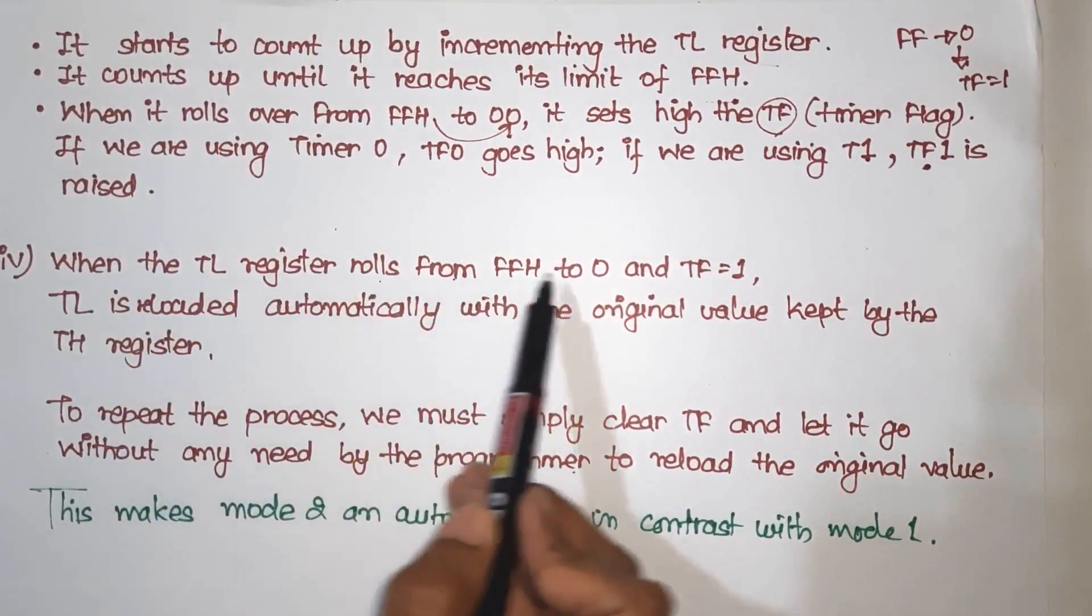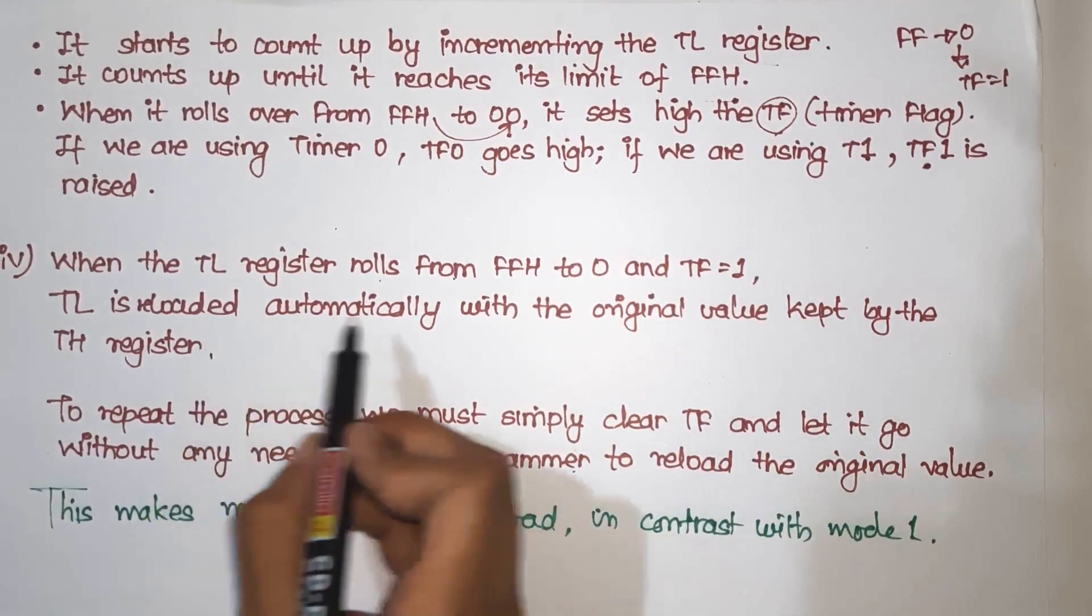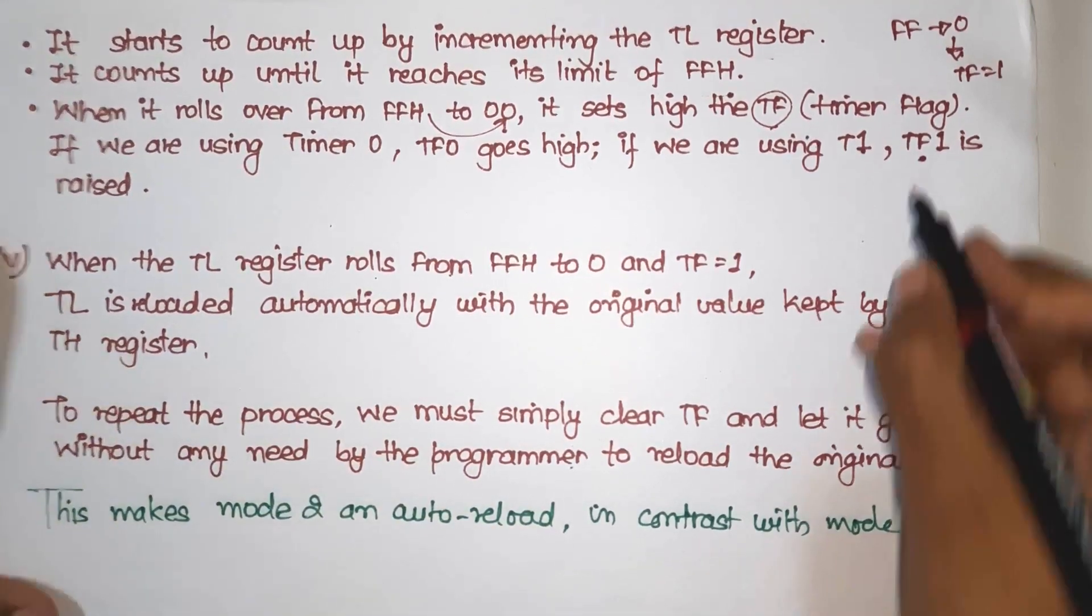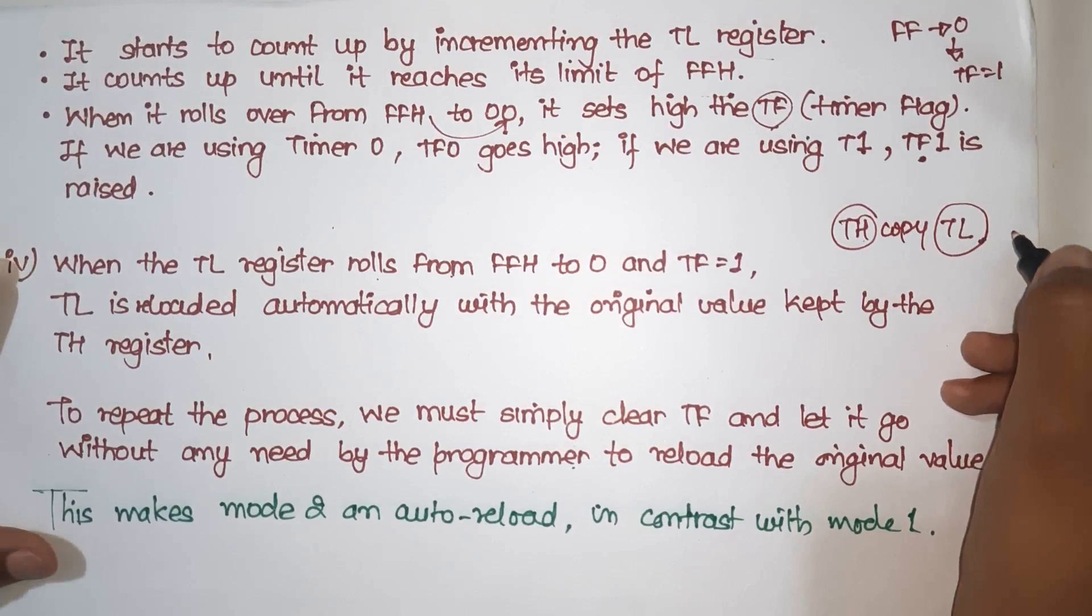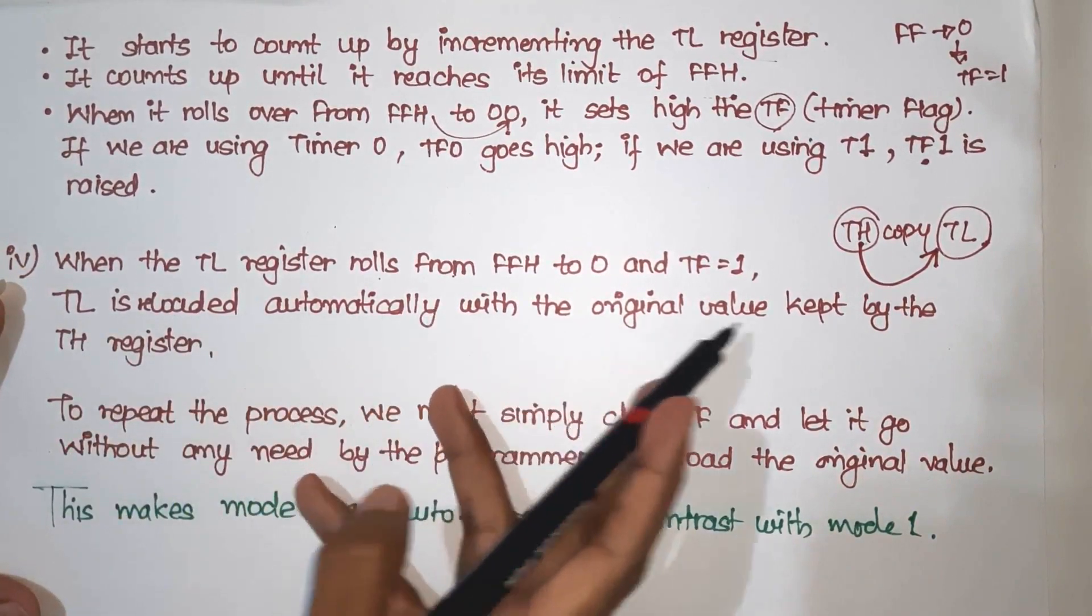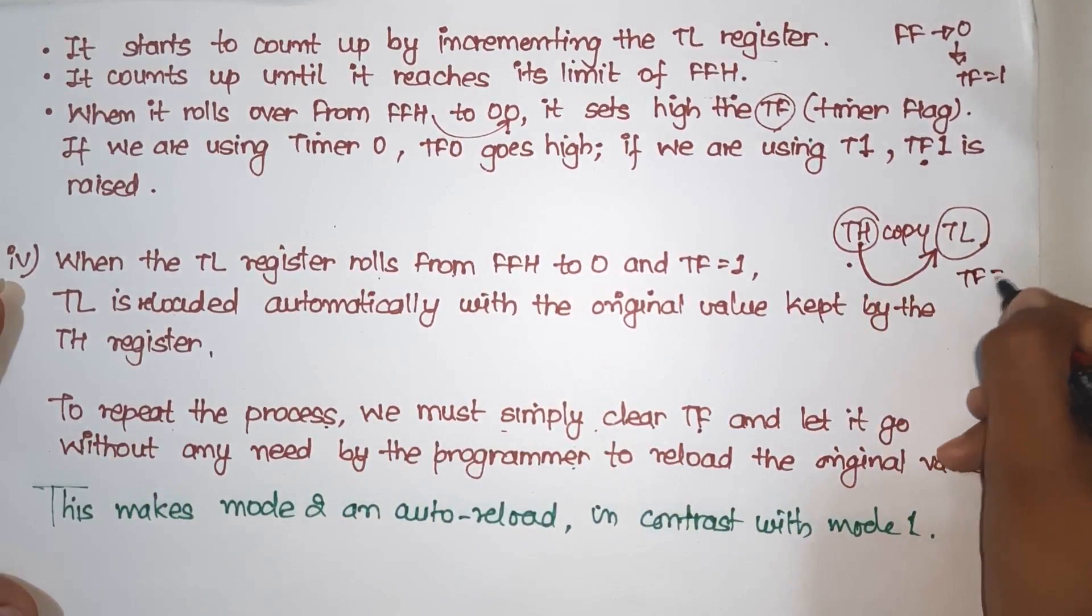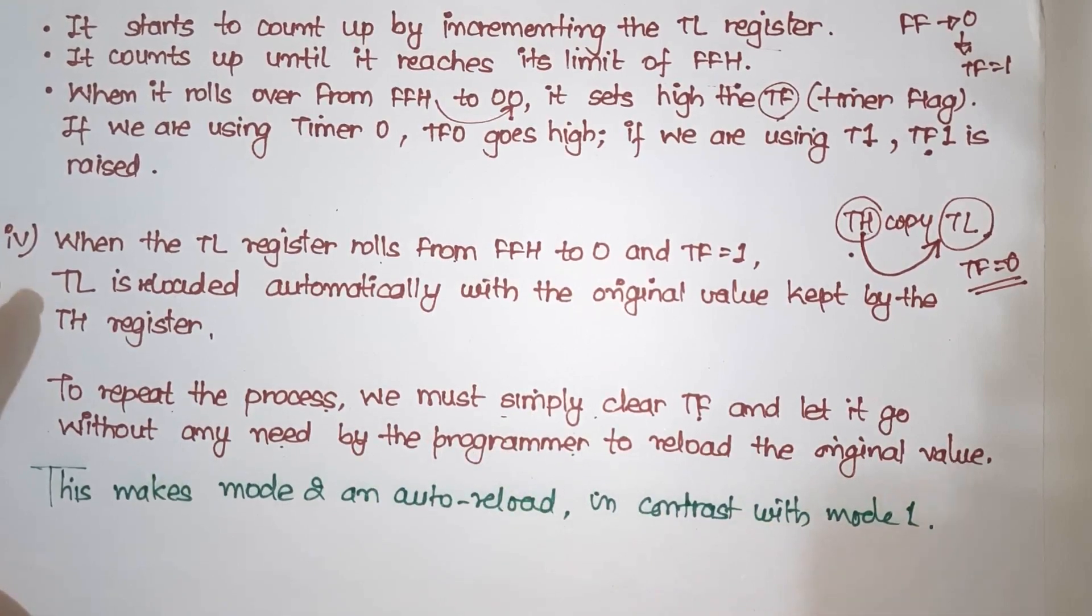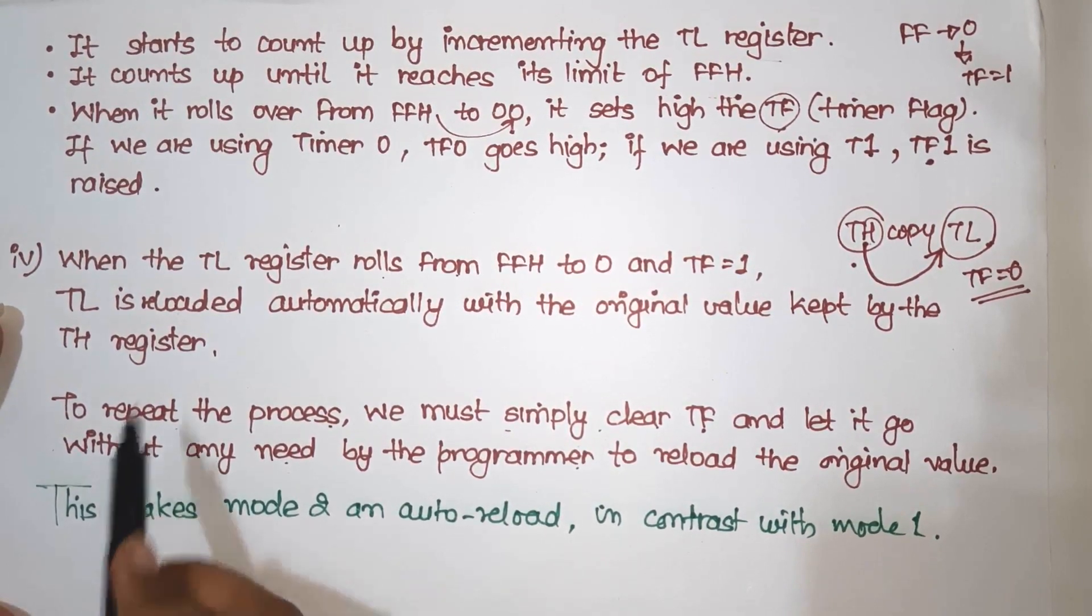Next is what? When the TL register rolls from FF to 0 and TF is equal to 1, our TL will be reloaded automatically with the original value kept by the TH register. So what did we see? The first value goes to TH. This is the copy of TL. So what happened here? TL overflows to TF1. So TL is reloaded automatically with the original value that is kept by the TH register. To repeat the process, we must simply clear TF. So this process repeats for TF0 and lets it go without any need by the programmer to reload the original value. So basically, we don't need to give the programmer original value back. It gets auto-reloaded.